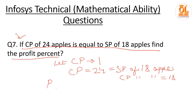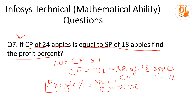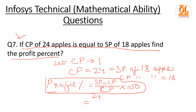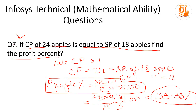Profit percent = (SP − CP)/CP × 100 = (24 − 18)/18 × 100 = 6/18 × 100 = 1/3 × 100 = 33.33%. Whenever CP of some items equals the SP of another quantity, always consider CP of one item as 1, then solve easily.